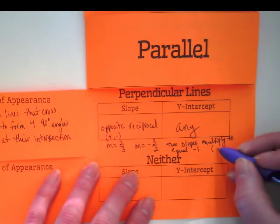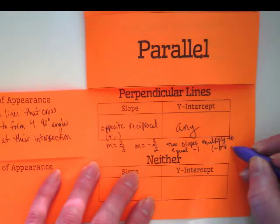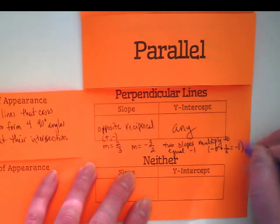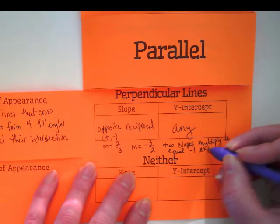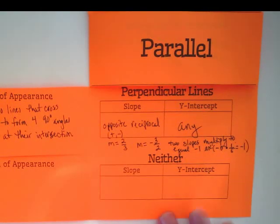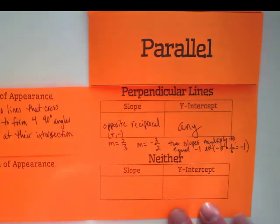So my example might be if I have negative five times positive one over five, it equals negative one, the two slopes of the two lines that cross at 90 degree angles. And that's how you get 90 degrees?